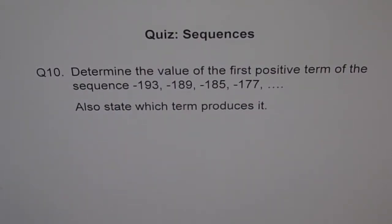Question number 10 is actually a thinking problem on sequences. It says, determine the value of the first positive term of the sequence minus 193, minus 189, minus 185, minus 177 and so on. Also state which term produces it.